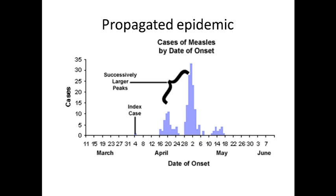The last variety is the propagated epidemic. This graph shows several cases of the disease occurring with intermittent peaks. After the first case, or index case, there are successively larger peaks of the disease occurring within the range of the incubation period. This is known as a propagated or progressive source epidemic. So what we have learned today is the different patterns of epidemic curves and what diseases can occur during an epidemic.